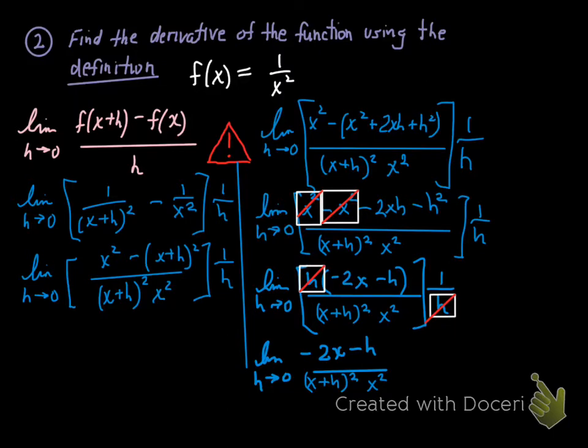When you do so and evaluate the limit, you should get this answer: negative 2x over x to the fourth. And a multiple choice selection, say on an AP exam, when you have those commonalities top bottom, would more likely look like negative 2 over x cubed. This is the correct derivative of the function 1 over x squared using the definition of derivative.